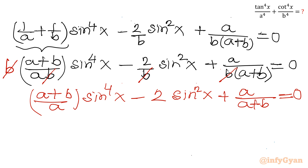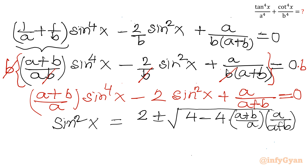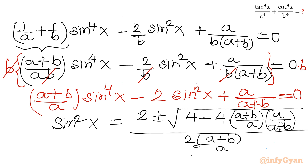Applying the quadratic formula for sin²x, where the quadratic is (a+b)/a · sin⁴x − 2sin²x + a/(a+b) = 0: sin²x = [−b ± √(b²−4ac)] / (2a). Here the coefficient b = −2, a_coeff = (a+b)/a, and c = a/(a+b). Substituting: sin²x = [2 ± √(4 − 4·(a+b)/a · a/(a+b))] / [2·(a+b)/a]. The product under the root simplifies: 4 − 4 = 0.